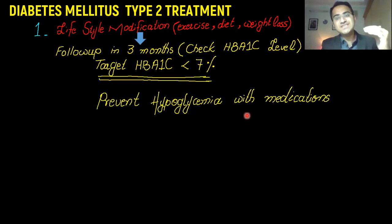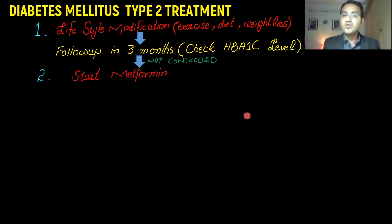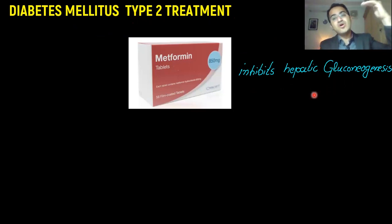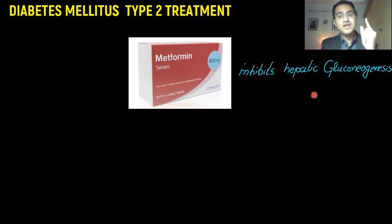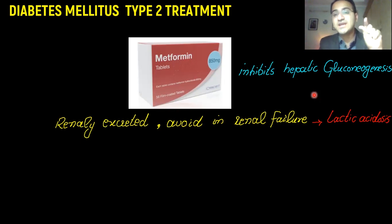If the patient comes back after three months and HbA1c is still not under control — greater than seven percent — you move to second-line therapy. You start the drug metformin. Metformin is a hypoglycemic drug that acts on the liver and inhibits hepatic gluconeogenesis, inhibiting synthesis of glucose from the liver and thereby lowering glucose levels. You must not administer it to renally impaired patients — those with renal failure — because the drug is excreted by the kidneys.